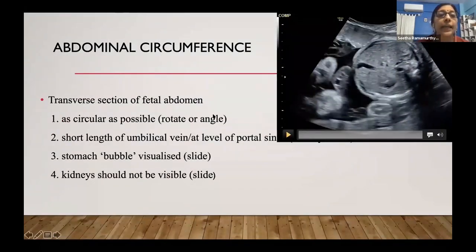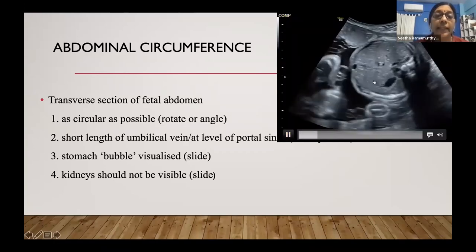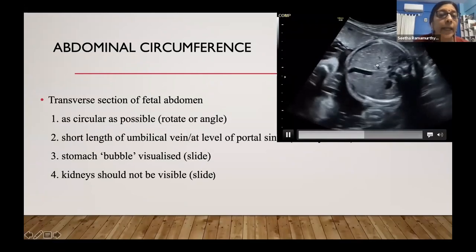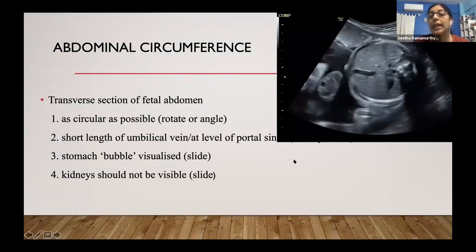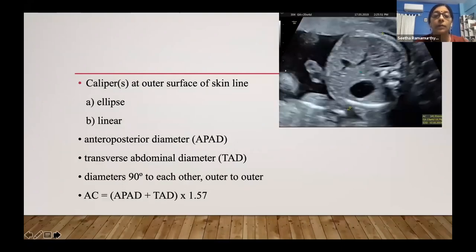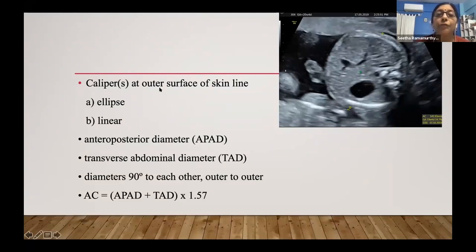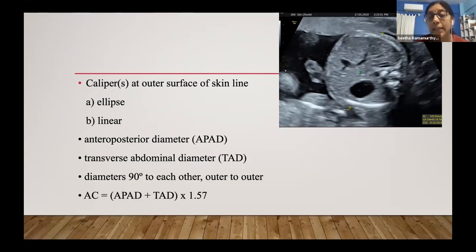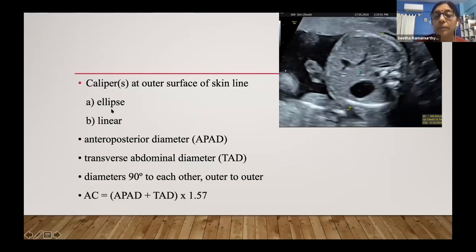For abdominal circumference, take a transverse section of the fetal abdomen and rotate to get as circular a figure as possible. A short segment of the umbilical vein should be seen at the level of the portal sinus; the stomach bubble should be visible and kidneys should not be seen. Calipers are placed at the outer skin surface, usually using the ellipse method. Small errors in AC measurement can significantly affect the estimated fetal weight.